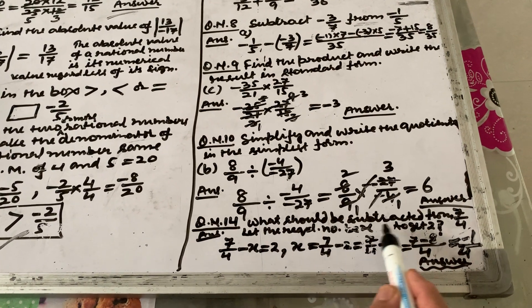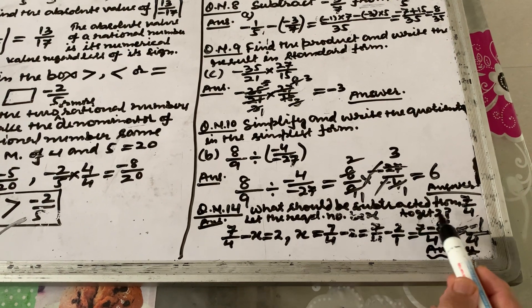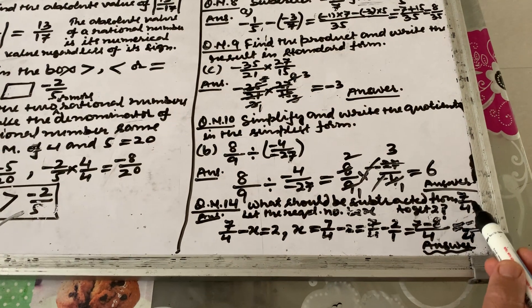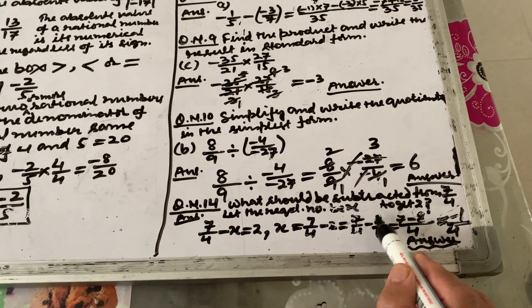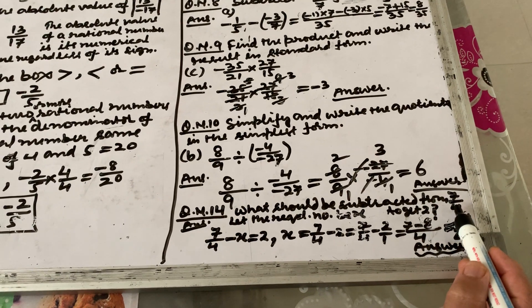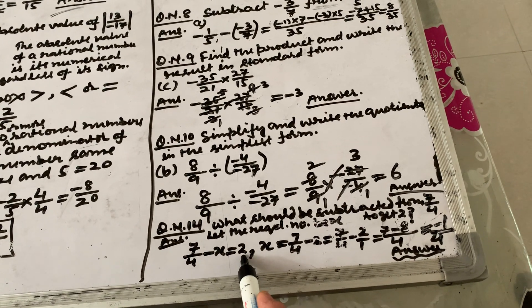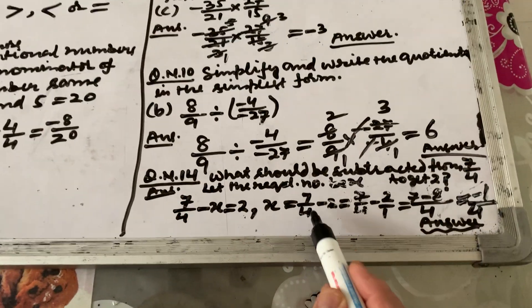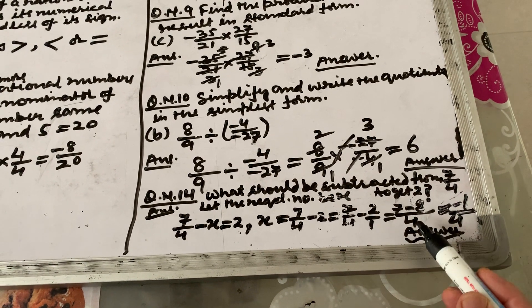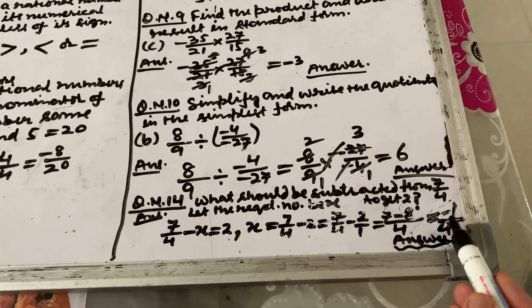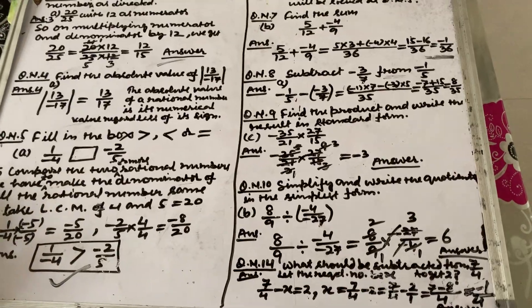Question number 14: what should be subtracted from 7/4 to get 2? Let the required number be x. Then: 7/4 − x = 2, so x = 7/4 − 2 = 7/4 − 2/1. Taking the LCM, that comes out as −1/4. So the answer is −1/4. This is the end of the session.